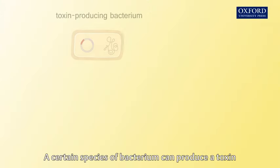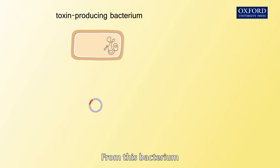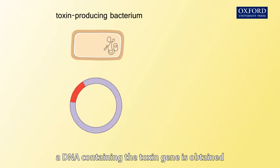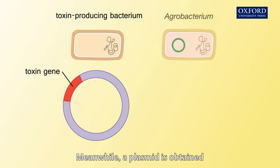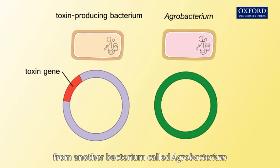A certain species of bacterium can produce a toxin that kills many insect pests. From this bacterium, a DNA containing the toxin gene is obtained. Meanwhile, a plasmid is obtained from another bacterium called agrobacterium.